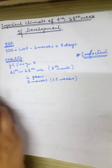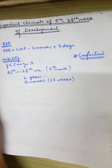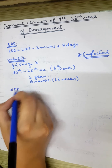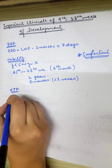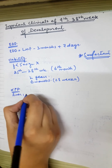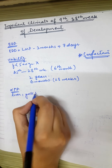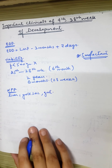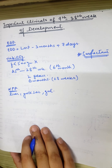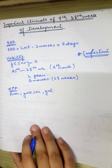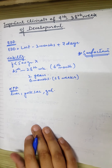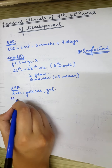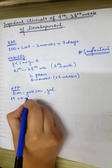Next is Alpha-Fetoprotein, or AFP. Alpha-Fetoprotein is produced in the fetal liver, yolk sac, and the gut. Remember these sites of production. The highest concentration of AFP is present in fetal serum. If the concentration is rising, it may indicate open neural tube defects.